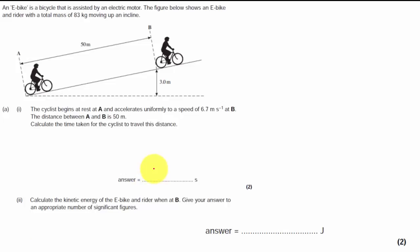We're being asked to calculate the time it takes the cyclist to do something. The cyclist goes from position A to position B and they accelerate uniformly. This is important.